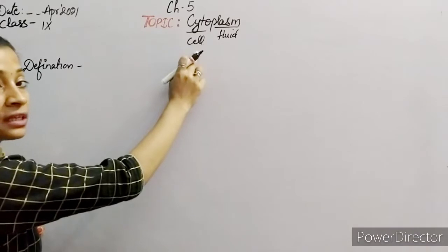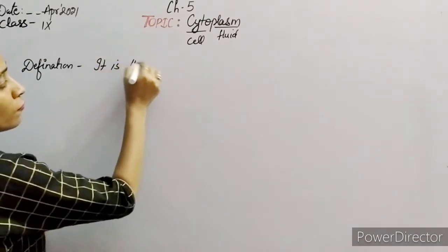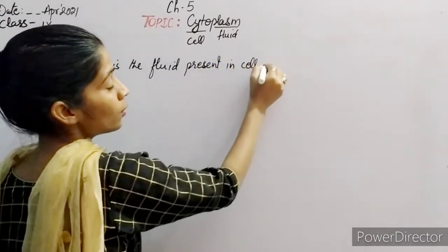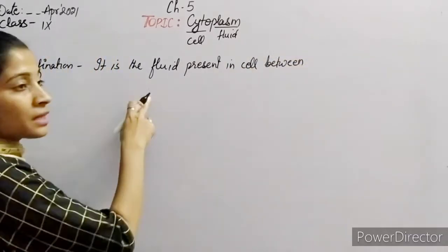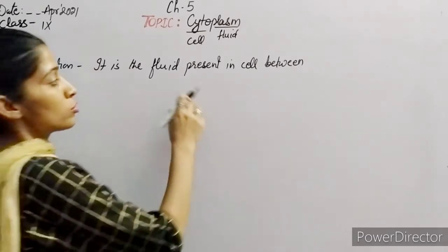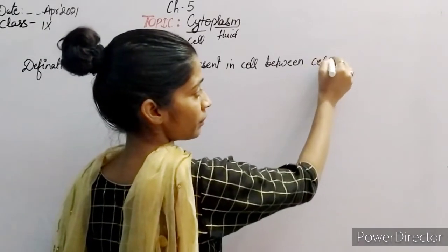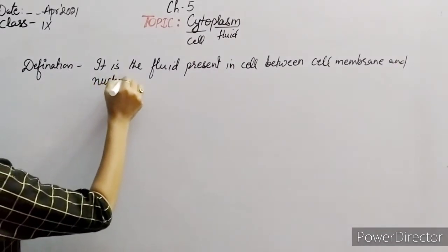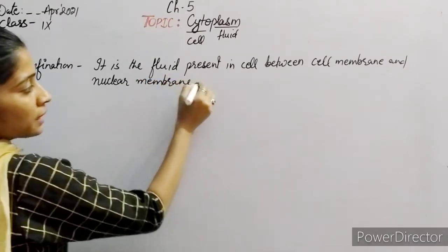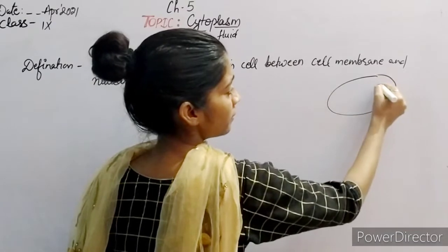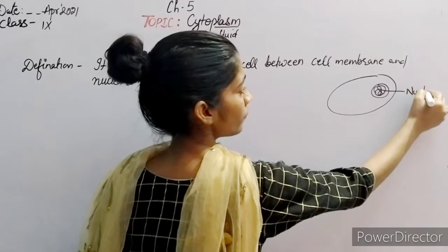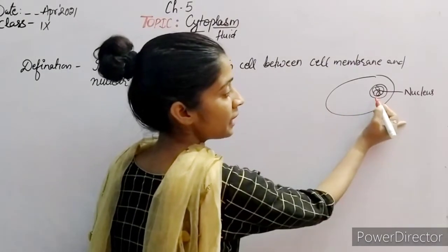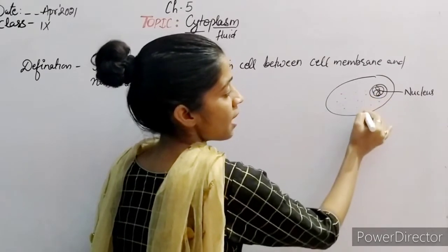Cytoplasm is the fluid present in the cell between the cell membrane and nuclear envelope, or we can say nuclear membrane. Assume like this is a cell here, and this is the nucleus or the genetic material of cell. So cytoplasm is actually a fluid which is present between this cell membrane and this nuclear membrane or envelope.